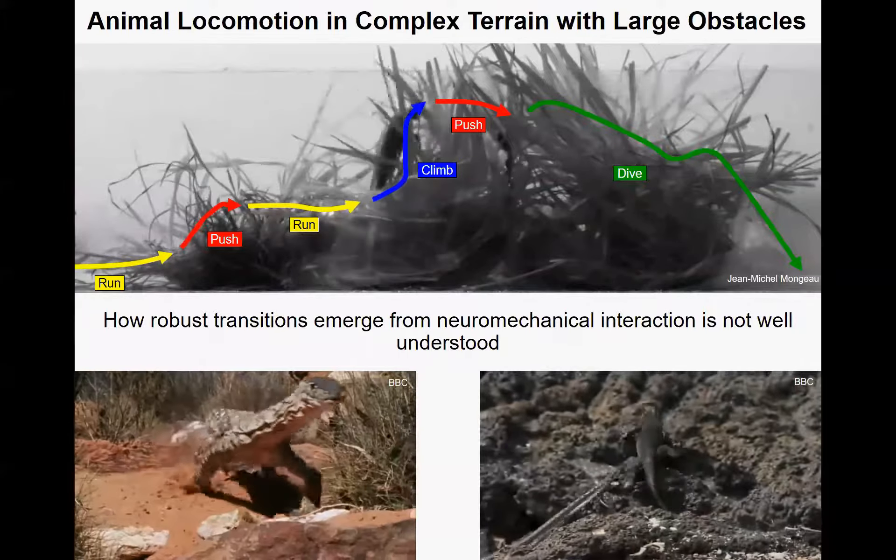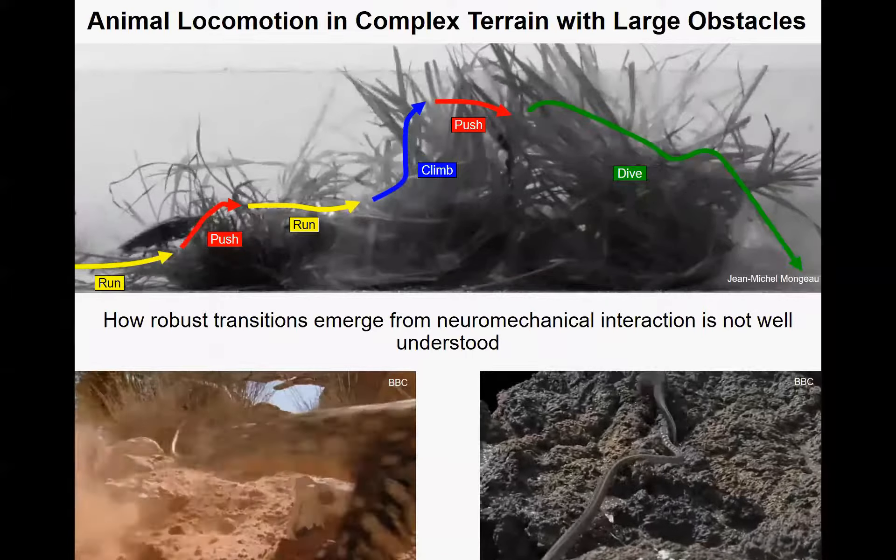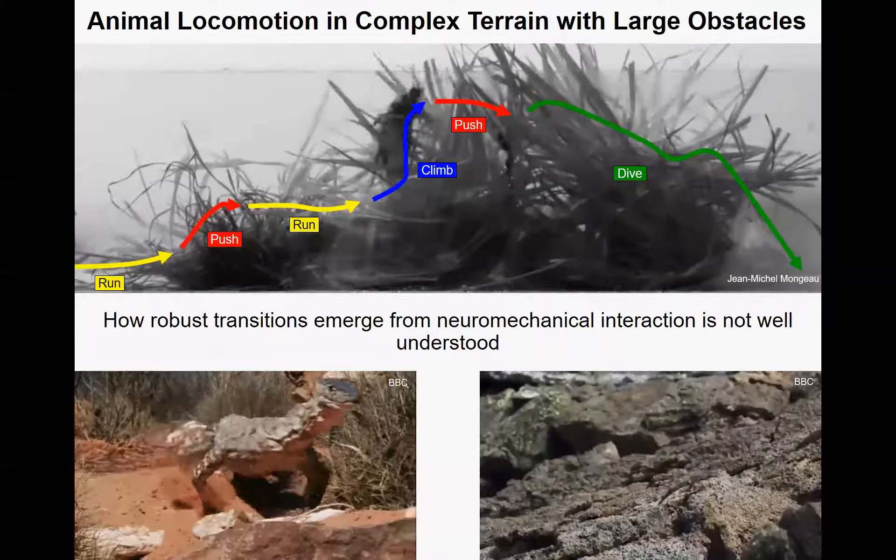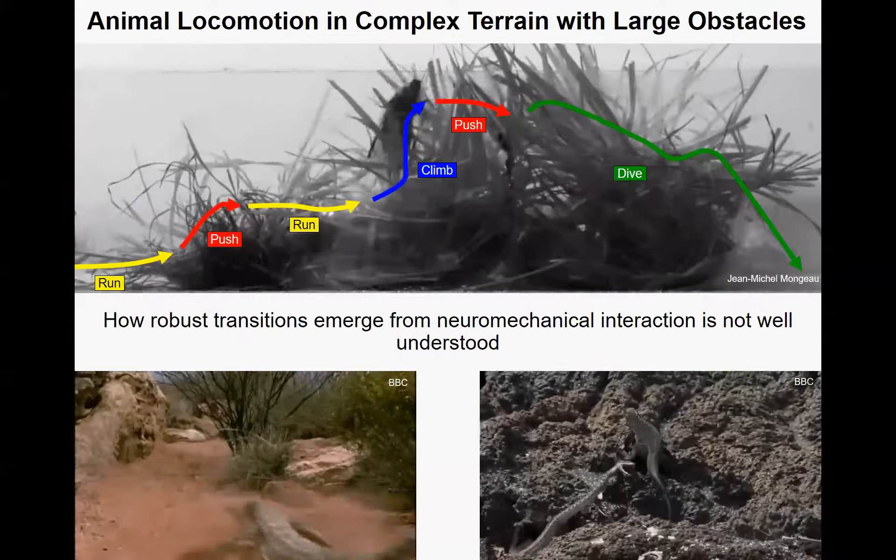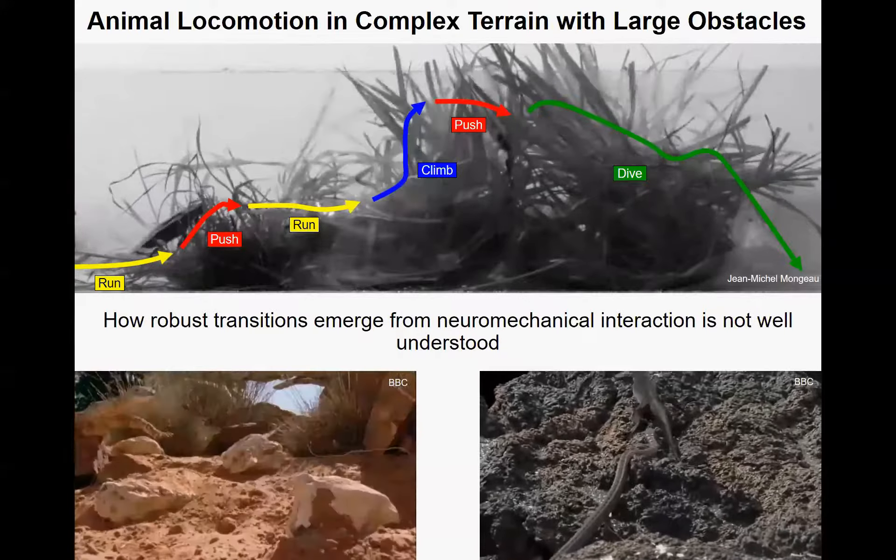The study of how an animal robustly traverses complex terrain, where interacting with the terrain and transitioning between different locomotor modes, can be insightful to guide us to develop mobile robots.